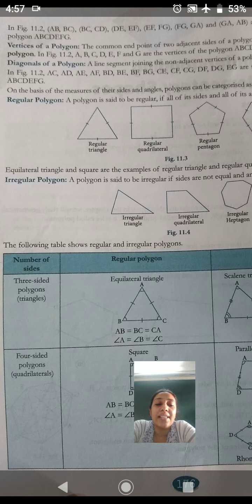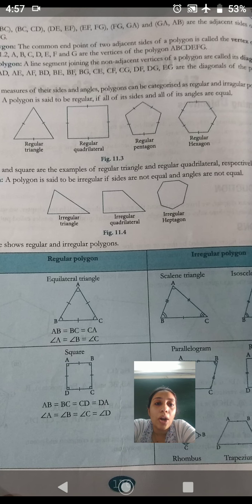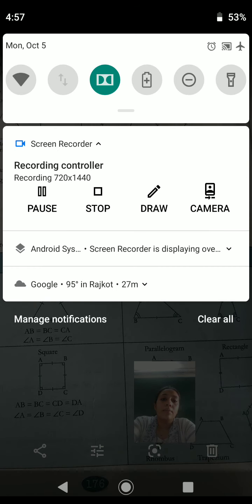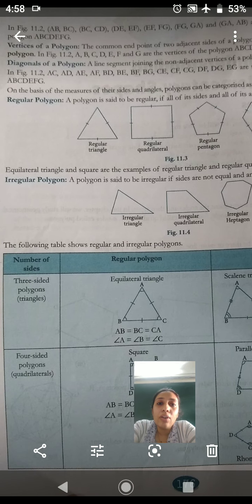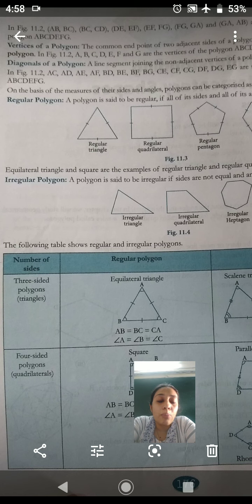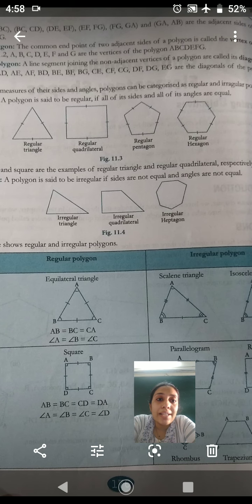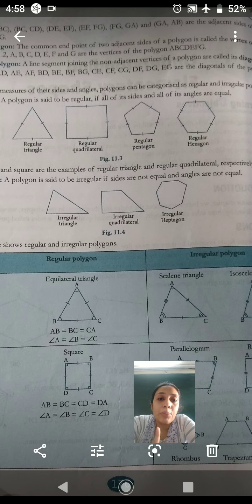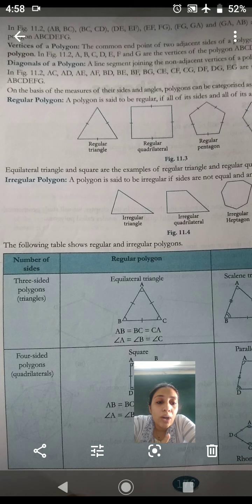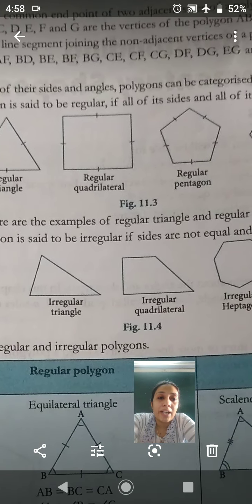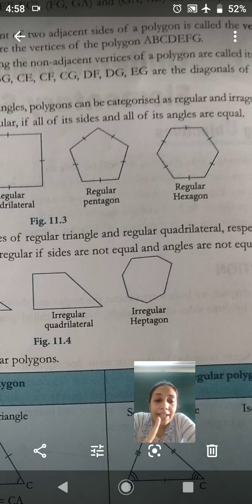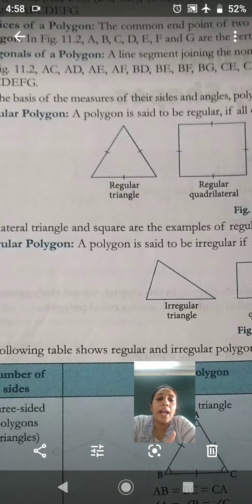Now, on the basis of measures of the sides and angles, if we look at the sides and angles, then polygons can be categorized as regular and irregular polygons. It's given over here that a regular polygon. A polygon is said to be regular when all the sides and all its angles are equal. That means all its sides and all its angles will be equal. If you look at a regular triangle, it will be equal. If you look at a regular quadrilateral, all four are given here. Pentagon is also given, hexagon is also given. If you look there, then all of them are equal. Its sides are also equal, and its angles are also equal. So whenever they are equal, that is called a regular polygon.